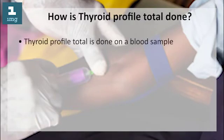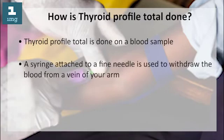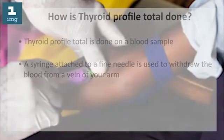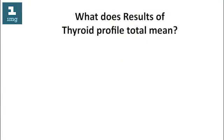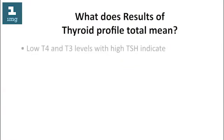How is thyroid profile total done? Thyroid profile total is done on a blood sample. A syringe attached to a fine needle is used to withdraw blood from a vein of your arm.